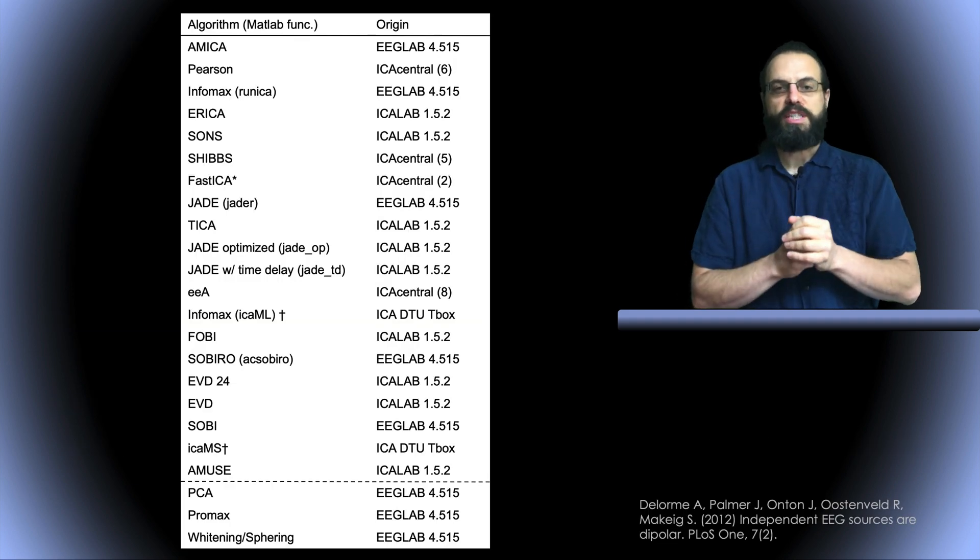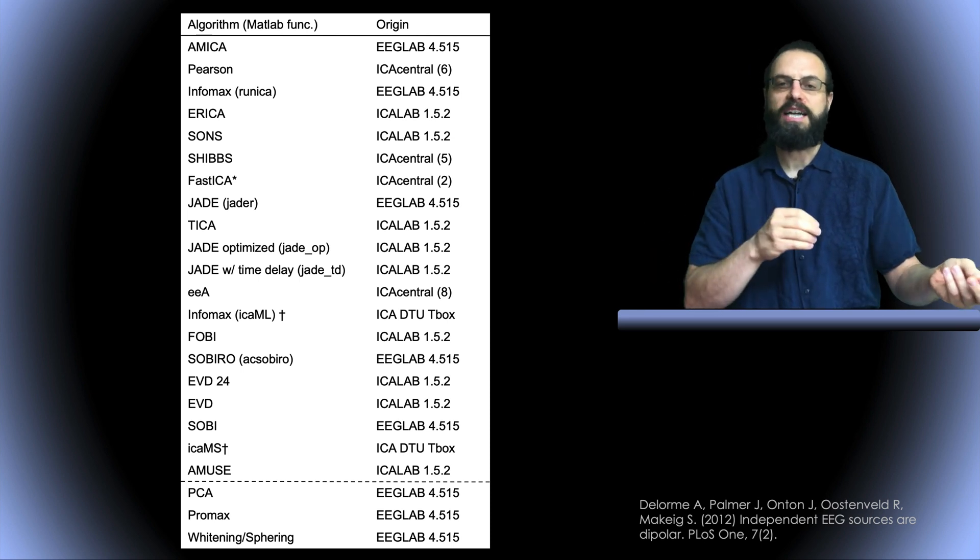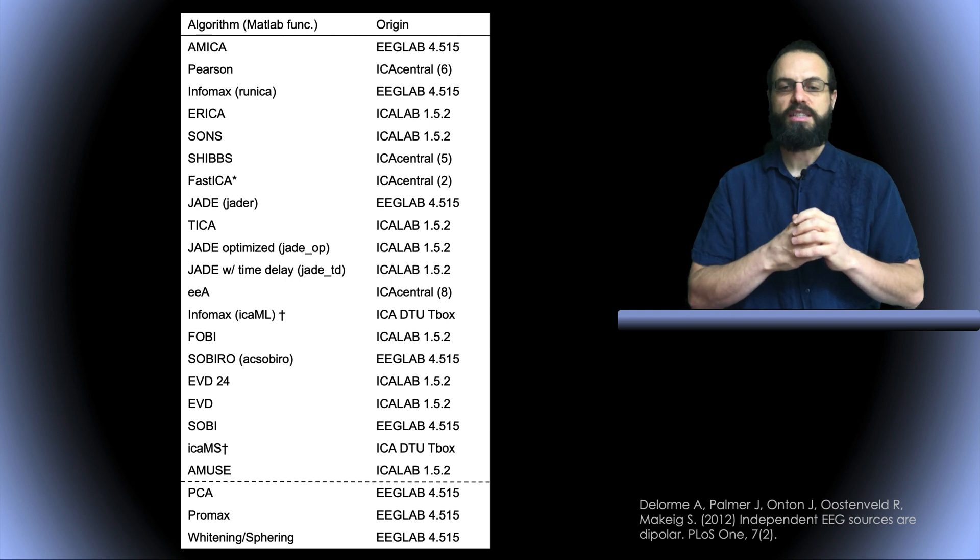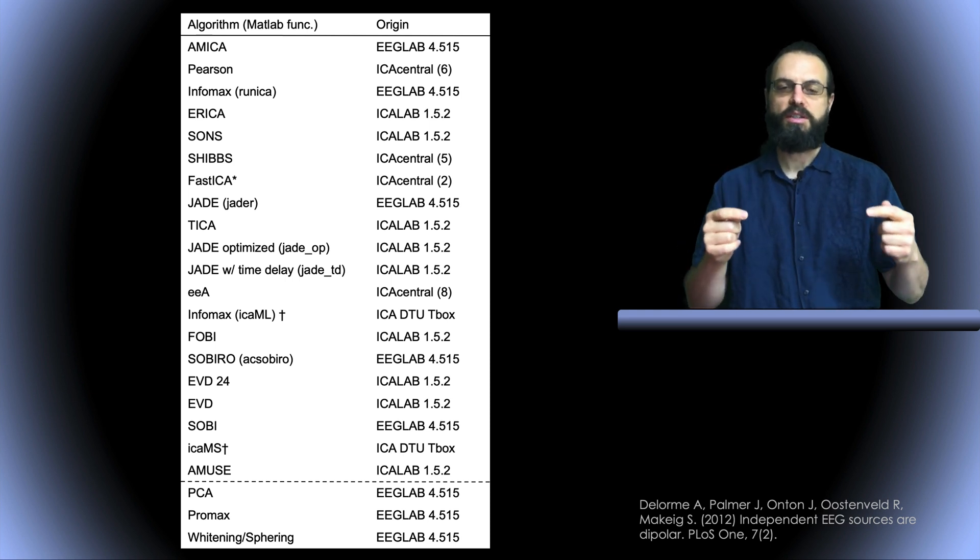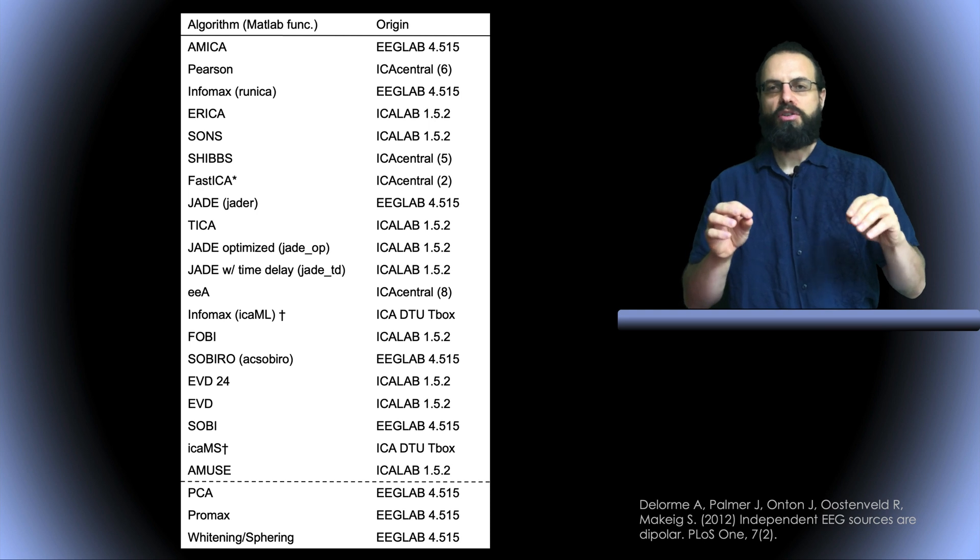These are the ICA algorithms we tested. A lot of them were in EEGLAB, some were in ICA Lab, and some we just downloaded on the internet. We also tested other algorithms which are at the bottom, such as principal component analysis, PCA. We also tested PROMAX and whitening sphering, which are not really blind source separation algorithms, but which are still linear decompositions.